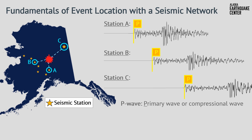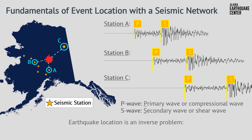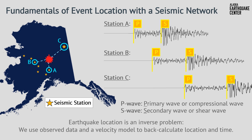Next, we need to locate the arrival of the secondary wave, or S wave. This is a shear wave and corresponds to side-to-side ground motion. The S wave is the second impulsive arrival in our waveforms and can be located here for Station A, and similarly for Station B here, and Station C here. Now we have a collection of P and S wave arrivals that we can use to calculate an earthquake location and event time. We do this through solving an inverse problem, which means we use observed data — P and S wave arrivals — paired with an Earth velocity model to back-calculate the location and time of an earthquake.